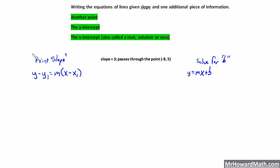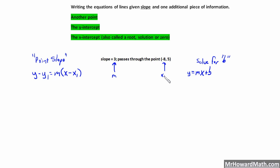Realize once you have the b value — the y-intercept — and the slope, you can write the equation of any line. Those are the only two pieces of information you need. So here we're given m is 3. This is our x-coordinate, x1, and this is our y-coordinate, y1.